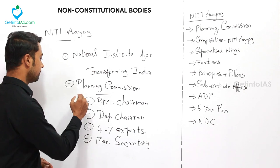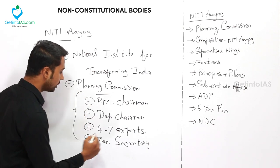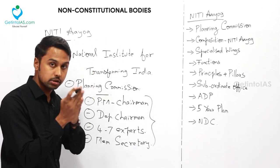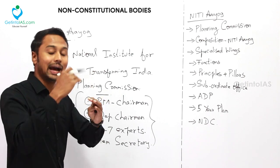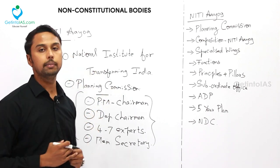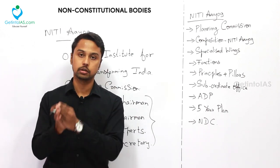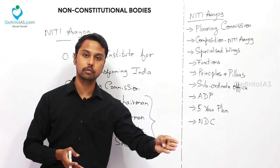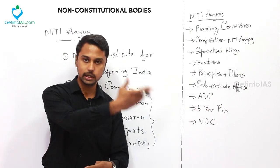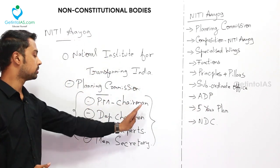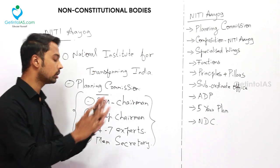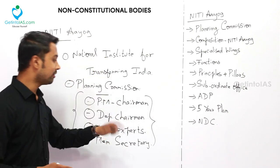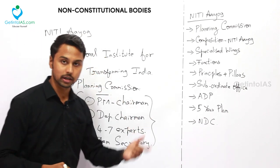One thing we can clearly understand from this composition is that there is no representation of states in the Planning Commission. That is the Planning Commission, and that is why it has been replaced by NITI Aayog, where you can find representation of states — which reflects the principle of cooperative federalism, the main agenda behind NITI Aayog.